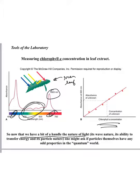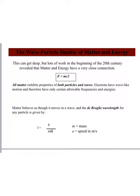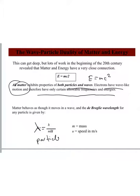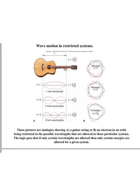So now that we have a bit of a handle of the nature of light, one might ask if particles themselves have any odd properties in the quantum world. The answer is yes. This can get deep, but a lot of work in the beginning of the 20th century revealed that matter and energy have a very close connection. All matter exhibits properties of both particles and waves. Electrons have wave-like motion and therefore only certain allowable energies and frequencies. The wavelength of any particle is proportional to the inverse of the speed and the inverse of the mass. Wave motion gets complicated, and I noticed that this PowerPoint presentation is 43 slides. I think I'm going to stop here and pick up with it later.